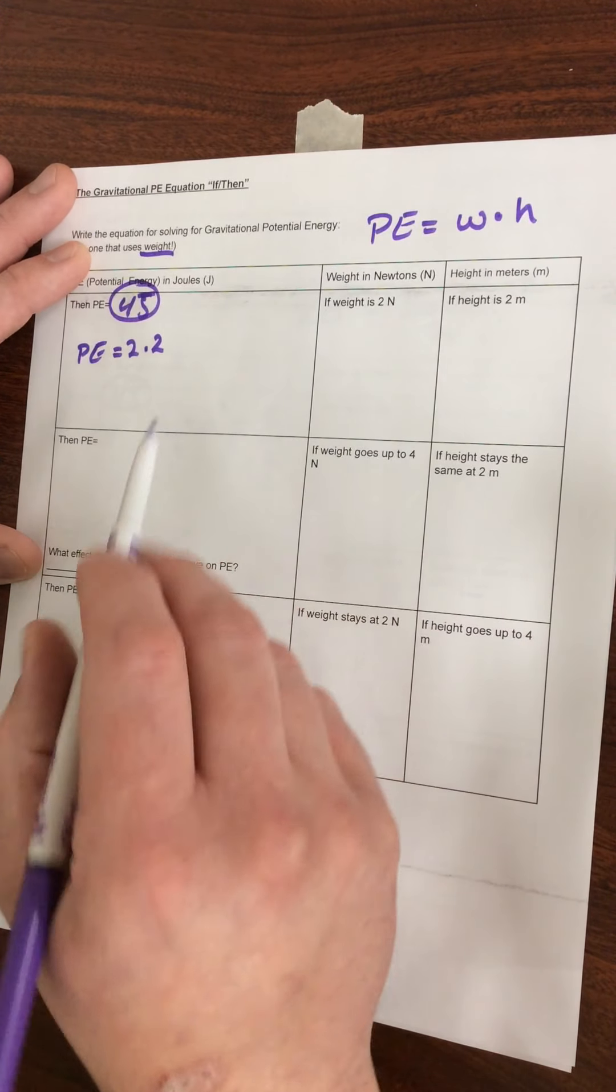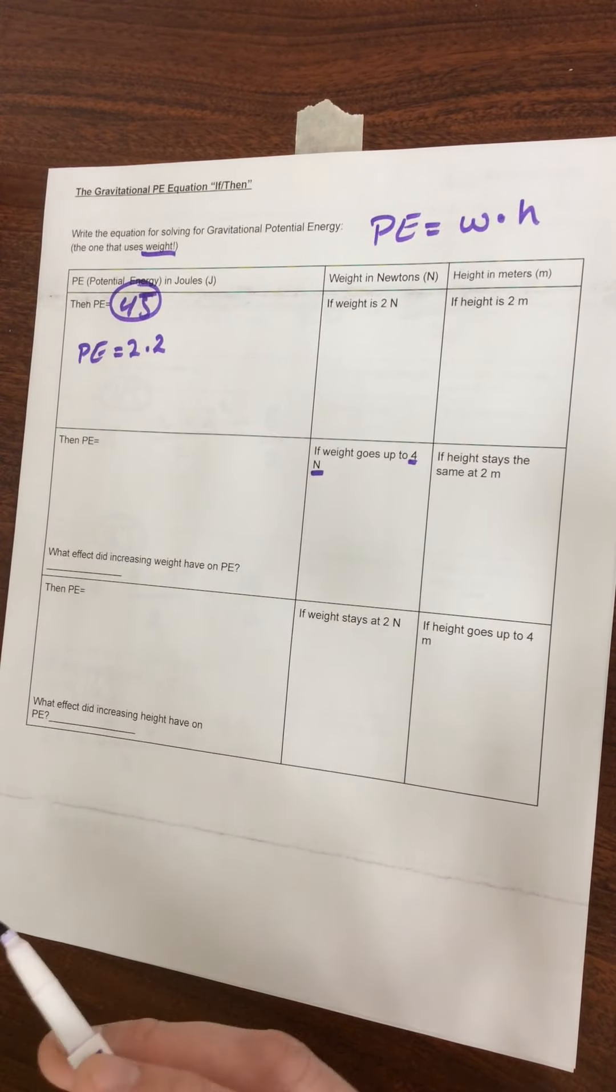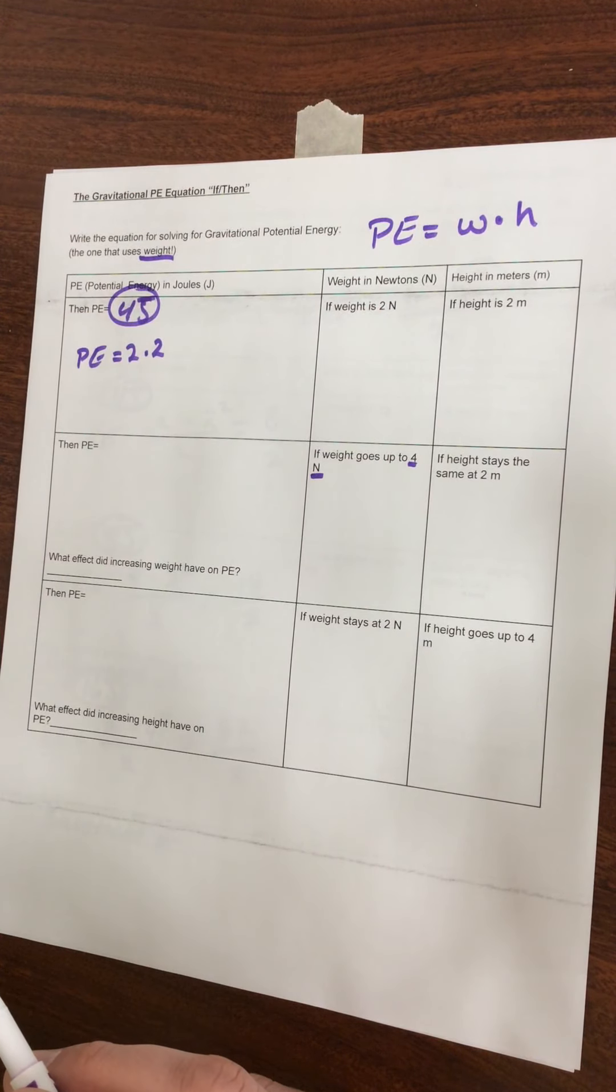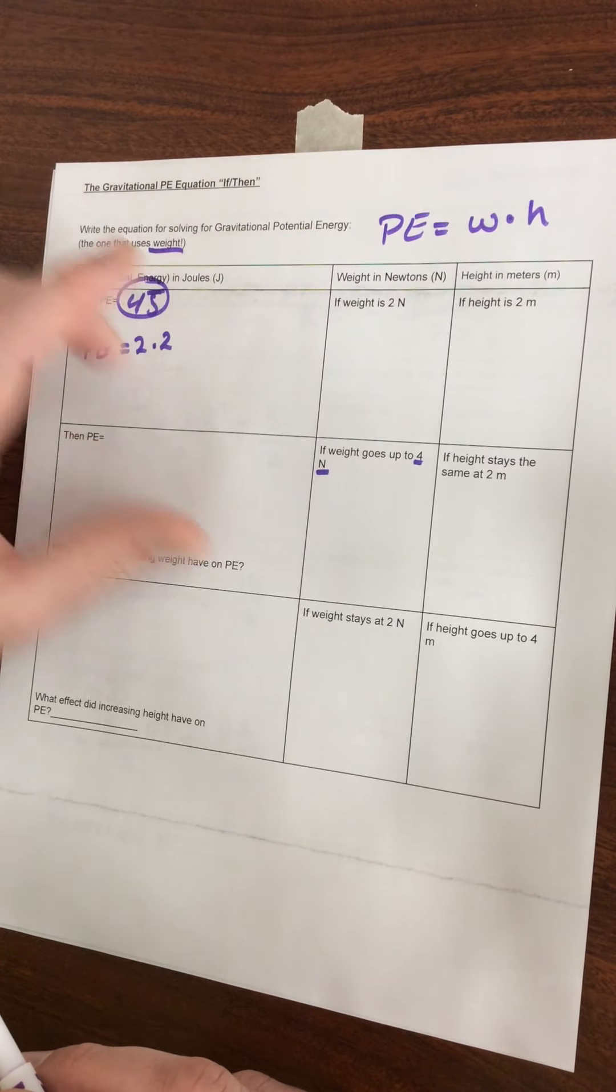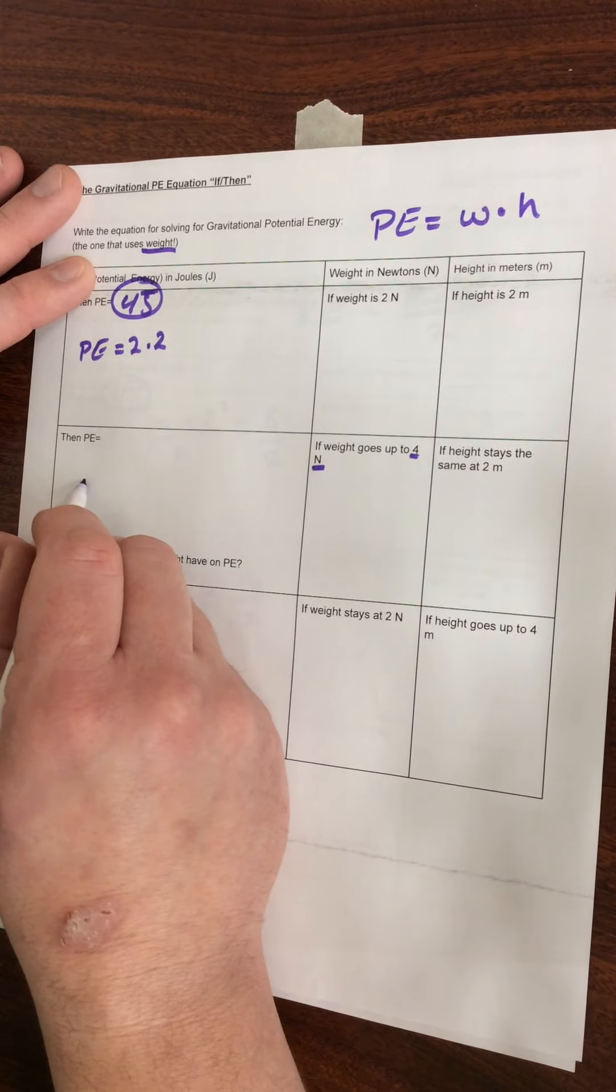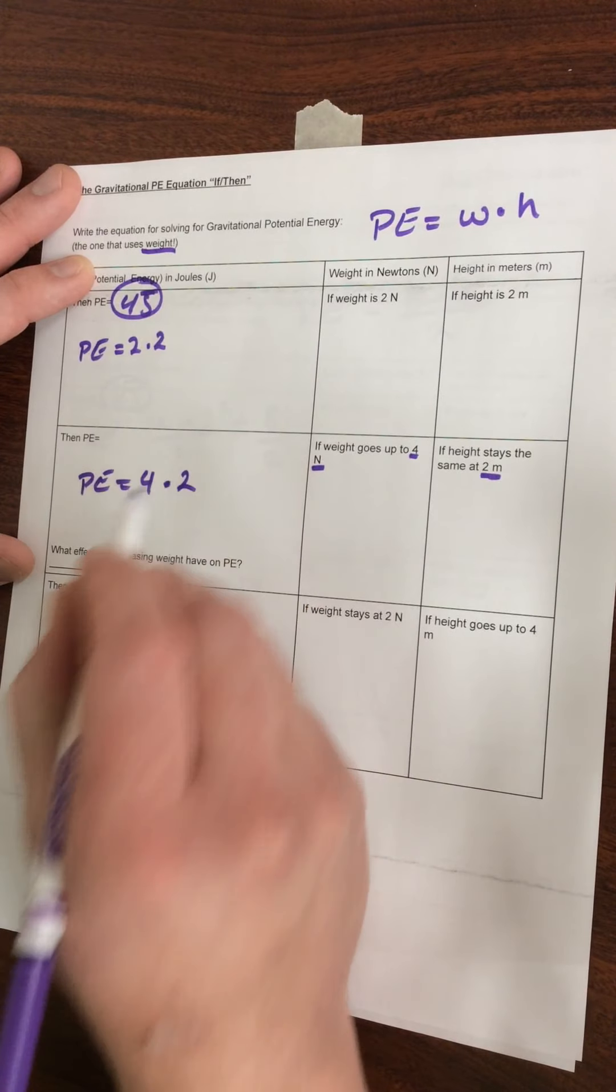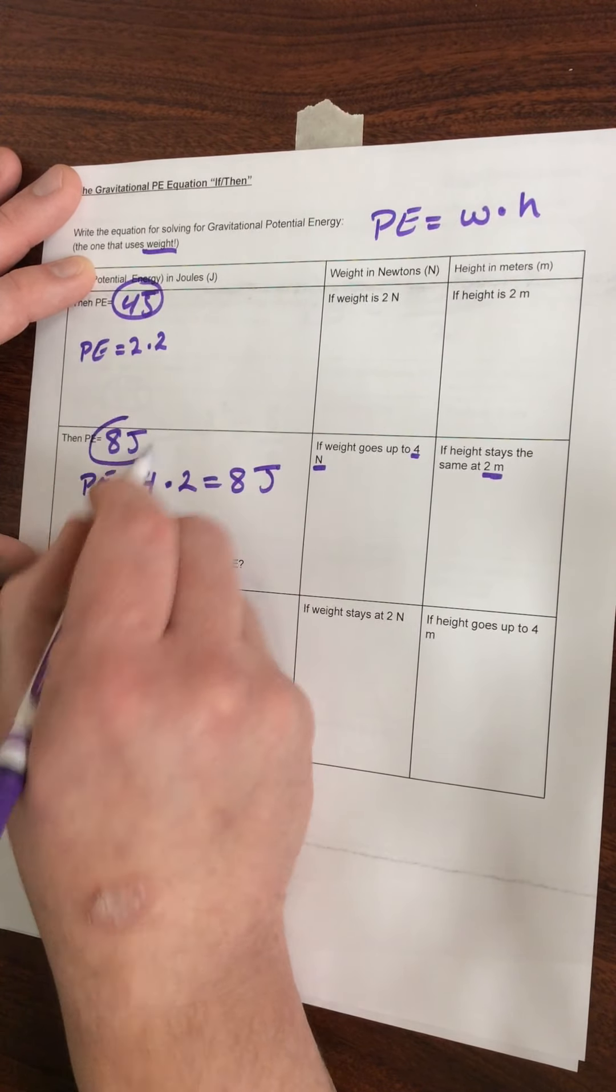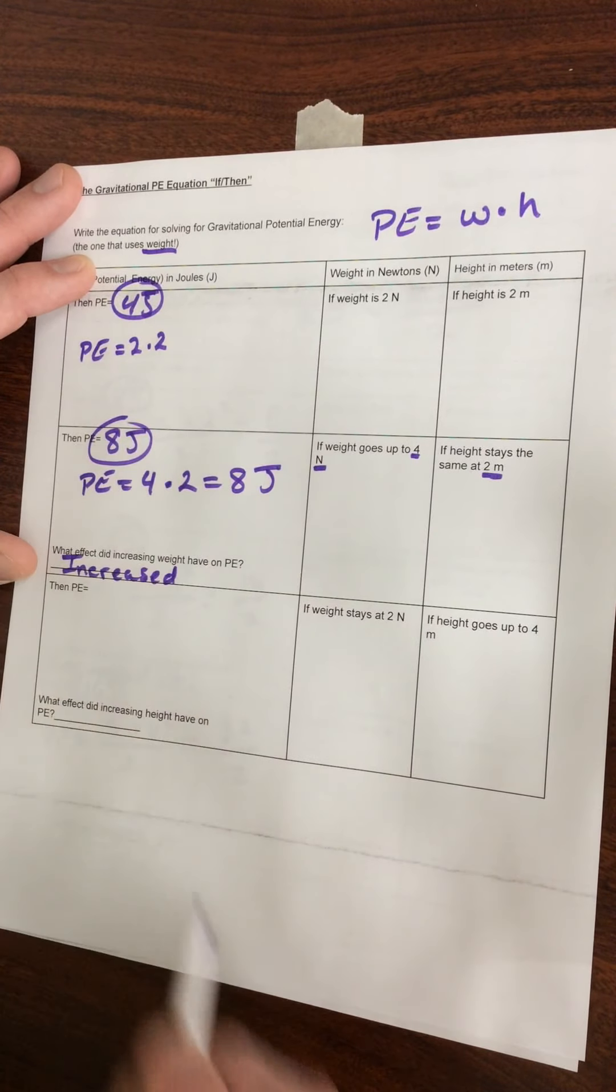For the next problem, we have the weight increasing to four newtons. Newtons are an important unit. If you see newtons in your potential energy problem, you know that we're dealing with weight. Newtons are the metric unit for force and weight. So if you see the capital N, you know we're dealing with the weight equation for potential energy. So four newtons, PE equals four, and we're going to keep the height the same at two meters. Four times two is going to give us eight joules. When we increased the weight, we increased our gravitational potential energy.